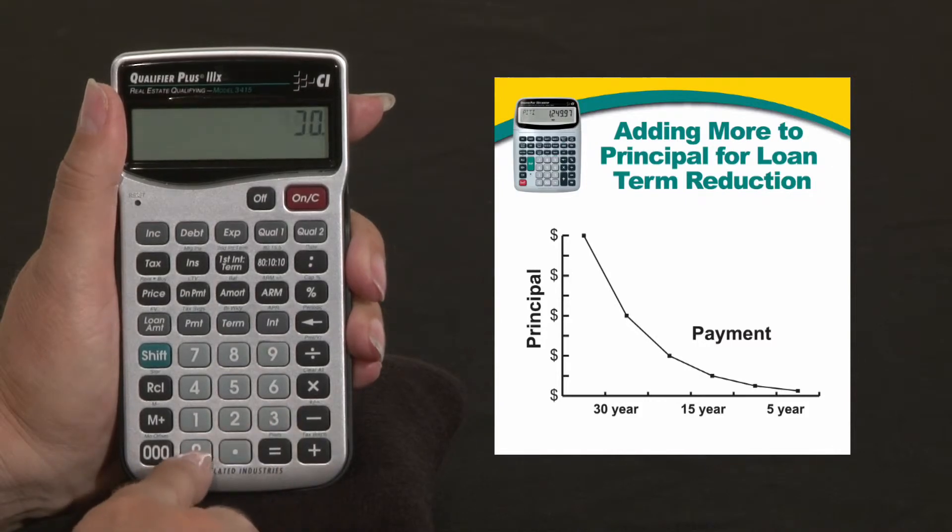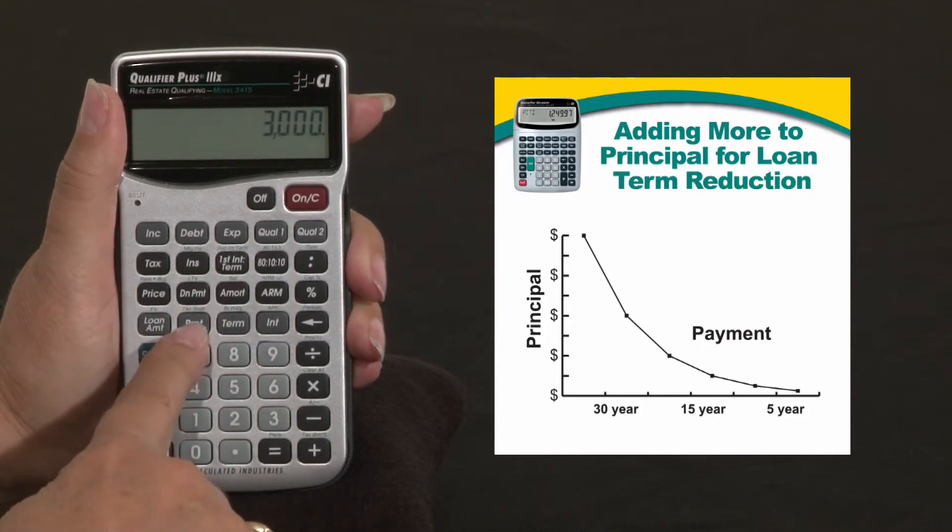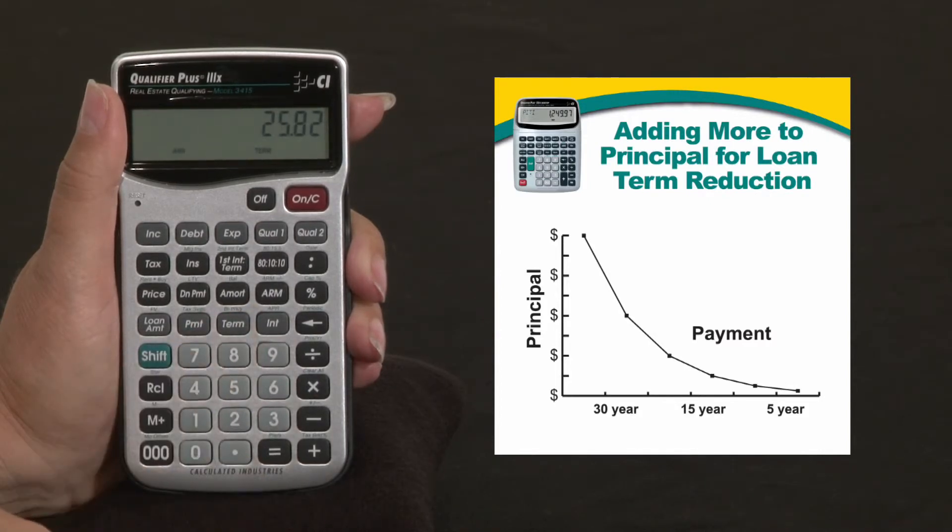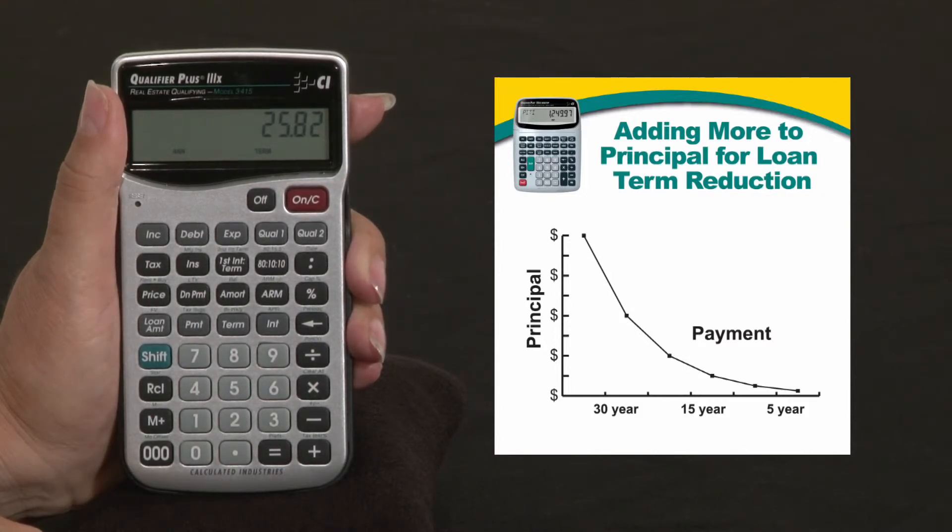We can enter $3,000 and make that the payment, and then by pressing term we can readjust the loan. Now instead of 30 years, he'll pay off his loan in 25.82 years.